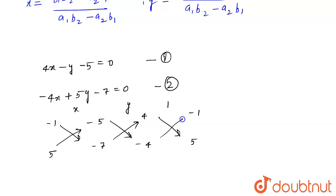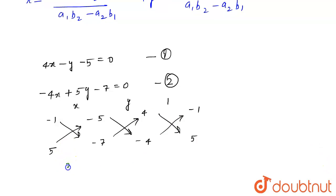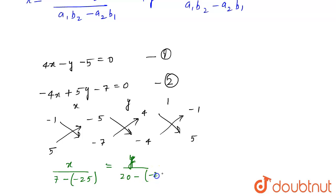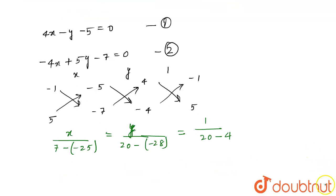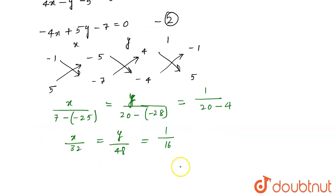Following the cross multiplication arrows, the value of x gives: x upon (minus 1 into minus 7 minus 5 into minus 5) equals y upon (minus 5 into minus 4 minus minus 7 into 4) equals 1 upon (4 into 5 minus minus 4 into minus 1). This simplifies to x upon 32 equals y upon 48 equals 1 upon 16.